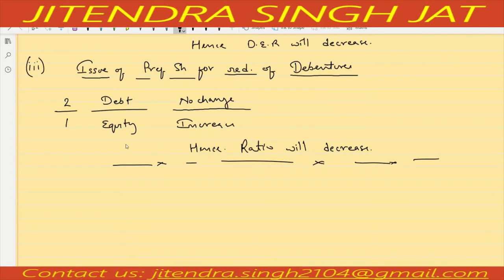Redemption means payment — payment of debentures means redemption of debentures. For the purpose of redemption of debentures, the company issued preference shares because the company needs money. So equity increases. But redemption is not yet done, so there is no change in debt. The ratio is 2 upon 1 — equity is increasing by 1 while 2 is not increasing, so obviously the ratio will decrease or decline.